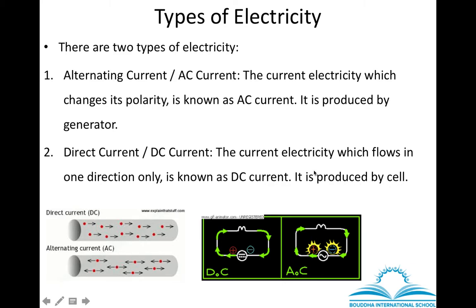In day-to-day life we use alternating current because the current produced by a generator or dynamo is AC current. The difference between AC and DC current: AC current keeps changing its polarity whereas DC current always flows in one direction. AC current is produced by a generator or dynamo, whereas direct current is produced by a cell. Also, AC current has a higher voltage value whereas DC current has a lower voltage.